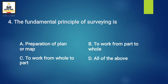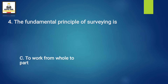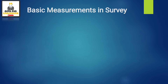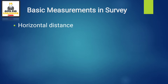Next question: the fundamental principle of surveying is. Answer: Option C, to work from whole to part. This principle is abbreviated as W — work from whole to part. This is a basic measurement concept.